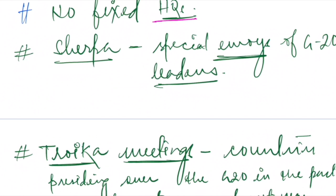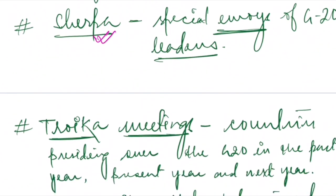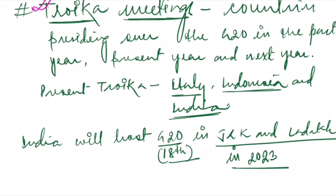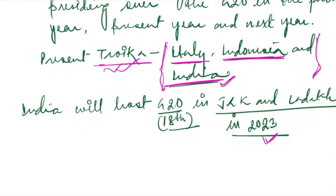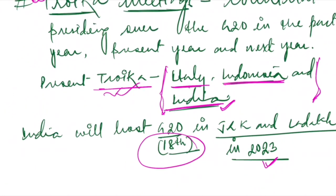Two important G20 terms: 'Sherpa' refers to a special envoy who accompanies a country's representative to the G20 meeting. 'Troika' refers to a setup of three countries — the previous year's host, the current year's host, and the next year's host. In 2023, India will host the 18th G20 summit in J&K and Ladakh. The 2022 summit is going to happen in Bali, Indonesia.